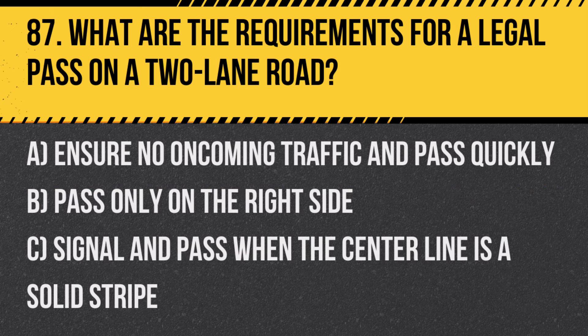Question 87: What are the requirements for a legal pass on a two-lane road? A. Ensure no oncoming traffic and pass quickly. B. Pass only on the right side. C. Signal and pass when the center line is a solid stripe. Answer: A. Ensure no oncoming traffic and pass quickly. Legal passing requires clear visibility and safety considerations.